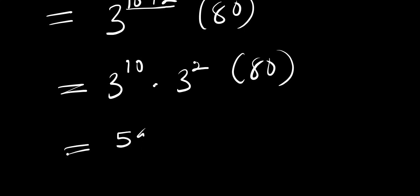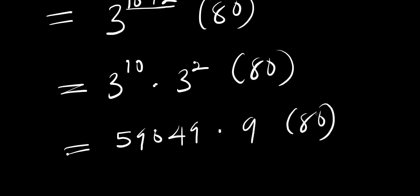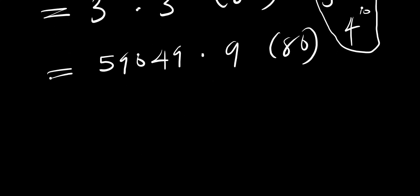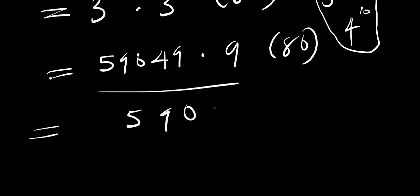The value of 3^10 is 59049, and 3^2 is 9. So we have 59049 times 9 times 80. As a mathematics student, you need to know key values like 3^10 so you can easily work through problems like this. Let's now multiply this out.